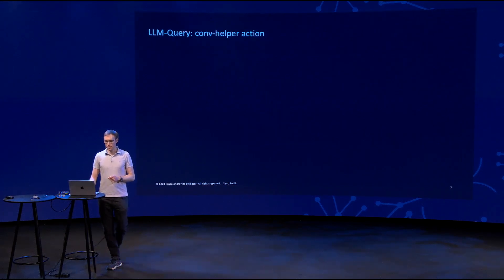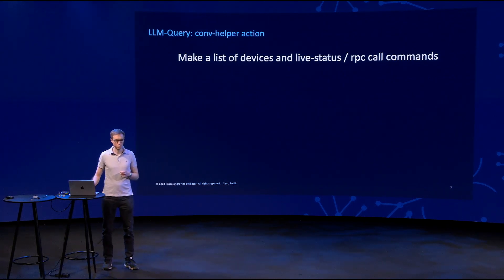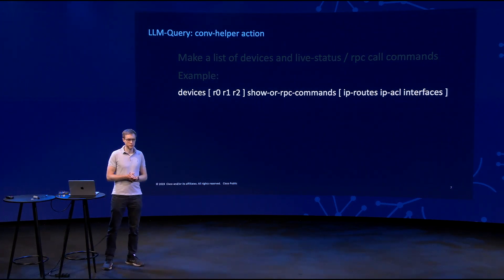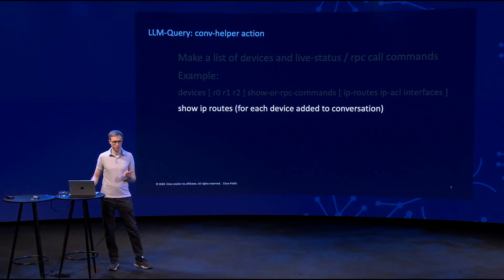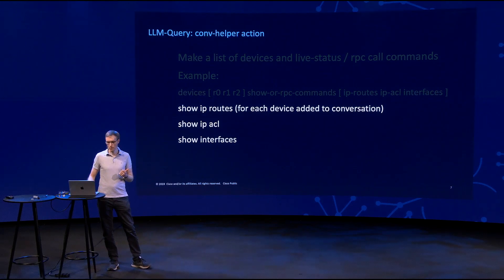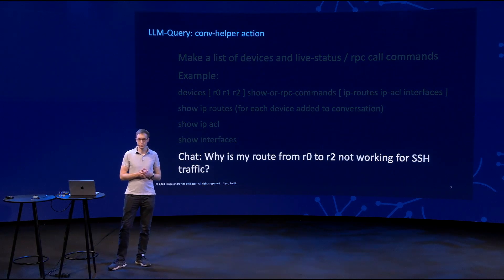Here's an example of the conversation helper action. You make a list of devices and show commands. You feed the device list and the show or RPC commands in a list, and this will actually do show IP routes, show IP ACL, show interfaces to any number of devices on the list. Then you can have the query attached to that.